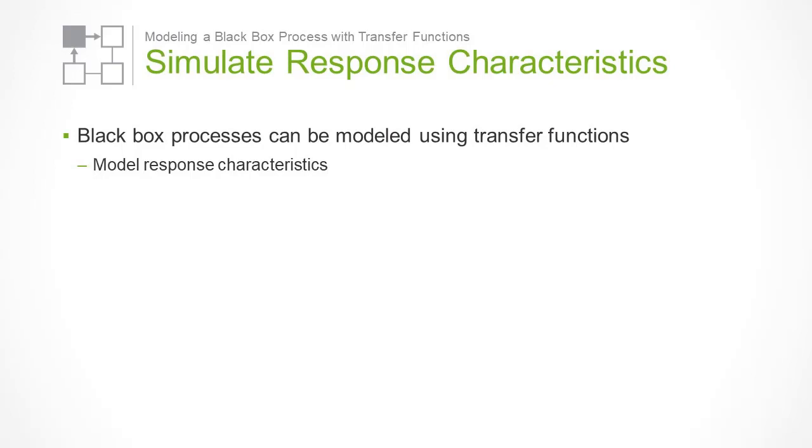Previously, we used the transfer function block to add a disturbance to a manipulated variable. You can also use the transfer function block to model black box processes that you cannot describe rigorously, but whose response characteristics are known.